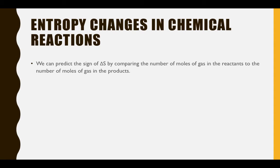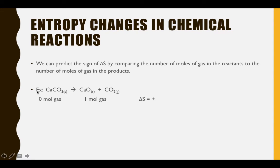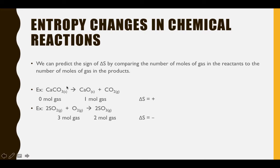One of the easiest ways to predict the sign of delta S in a chemical reaction is to count the number of moles of gas in the reactants and products. For example, if we have no moles of gas in the reactants and 1 mole of gas in the products, we have increased entropy. In another example, with 3 moles of gaseous reactant and 2 moles of gaseous product, we have decreased entropy.